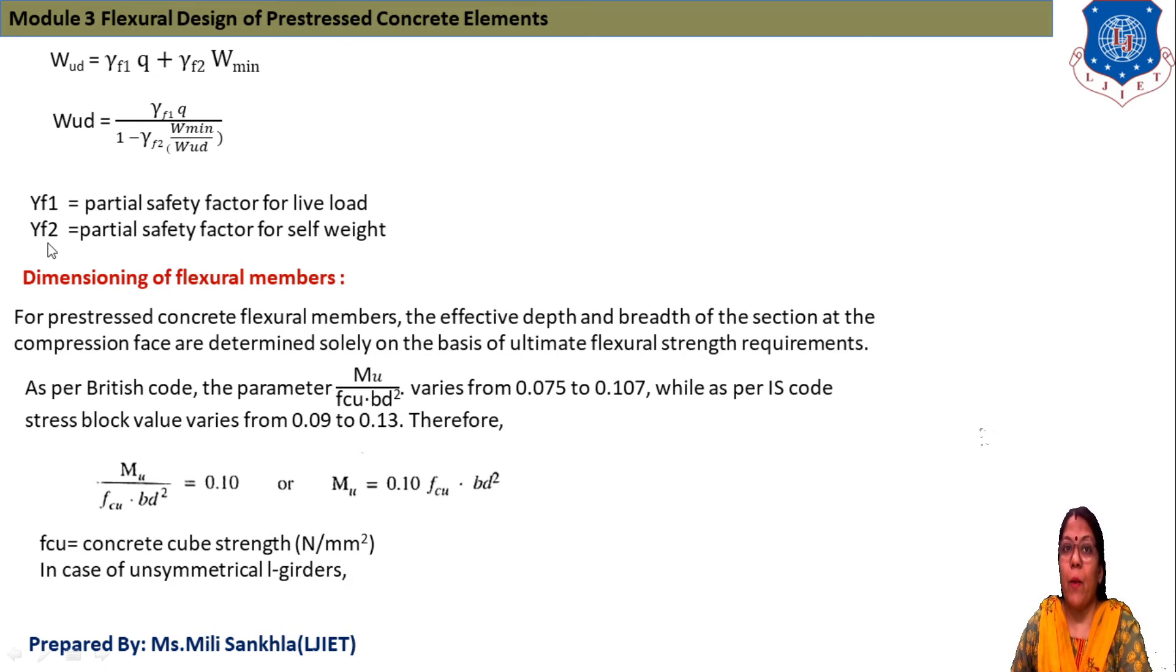γF1 is partial safety factor for live load, γF2 is partial safety factor for self-weight. Dimensioning of flexural members: for pre-stressed concrete flexural members, the effective depth and breadth of section at compression face are determined on basis of ultimate flexural strength requirements. As per British code, the parameter MU/(FCK×B×D²) varies between 0.075 to 0.107, while as per IS code stress block values vary from 0.09 to 0.13. So MU/(FCK×B×D²) equals 0.1, or MU = 0.1 × FCK × B × D².